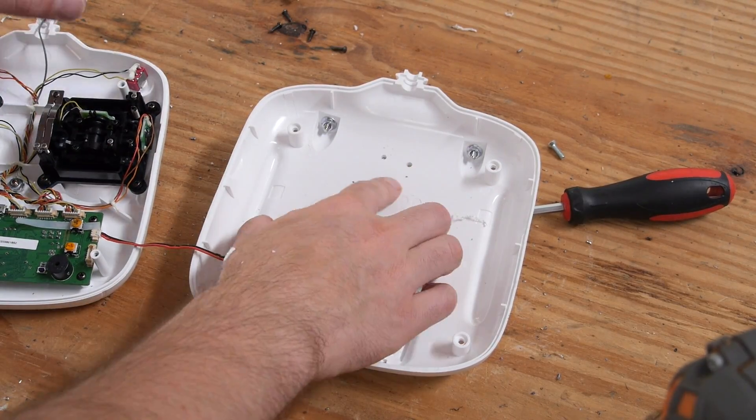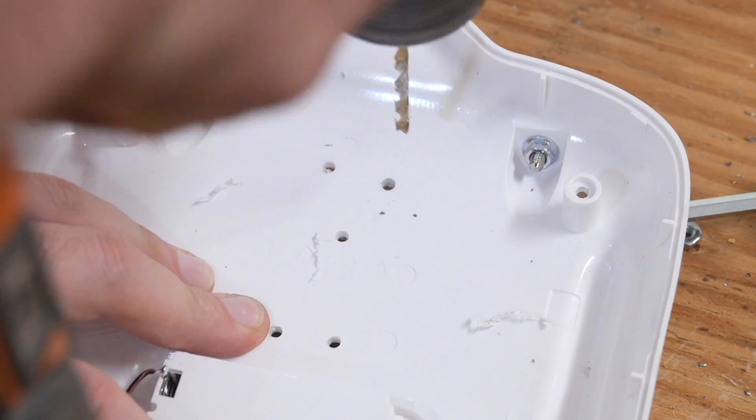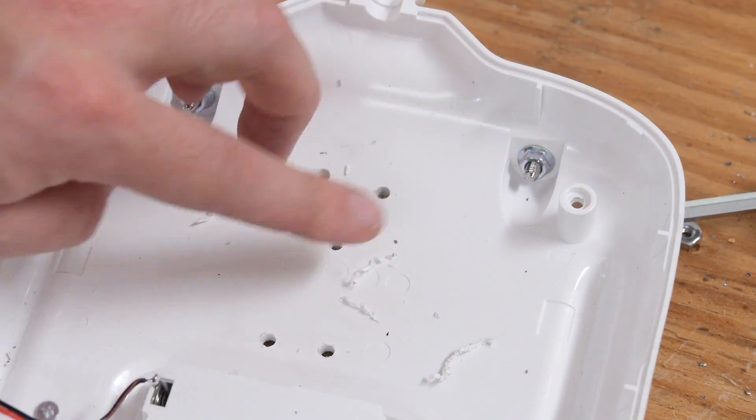Then enlarge the outer holes to accommodate the machine screws, and the center hole on the controller to be a bit larger than the tapped center hole on the plate.